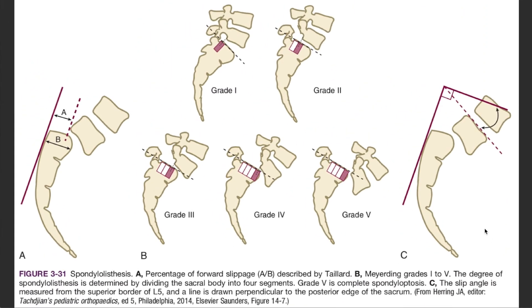And the last picture here, C, is the slip angle, which is measured from the superior aspect of the vertebral body that has slipped, compared to the perpendicular line that is drawn from the posterior edge of the sacrum. And these are the slip angle.